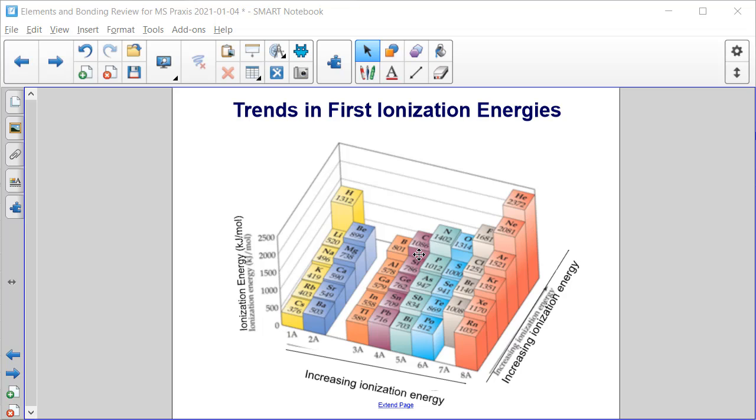As we go down a group in the periodic table, we can see that the ionization energy is decreasing as we add an energy level with each new row of the periodic table.